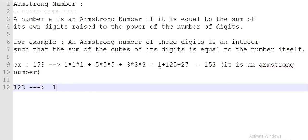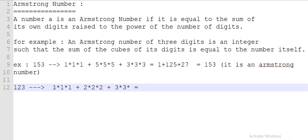We separate all three digits: 1 + 2 + 3. The count of digits is 3, so we compute cubes: 1×1×1 = 1, plus 2×2×2 = 8, plus 3×3×3 = 27. The sum is 36. Since 123 is not equal to 36, it is not an Armstrong number.